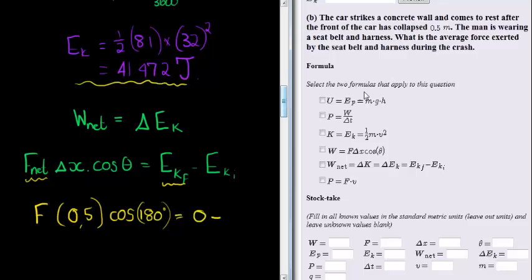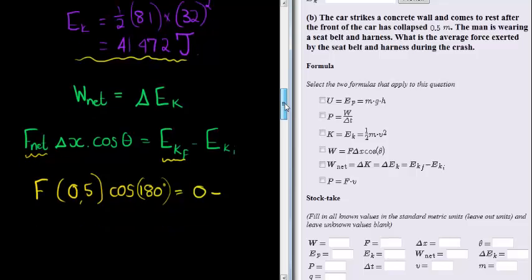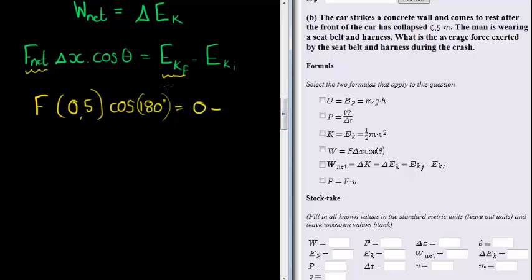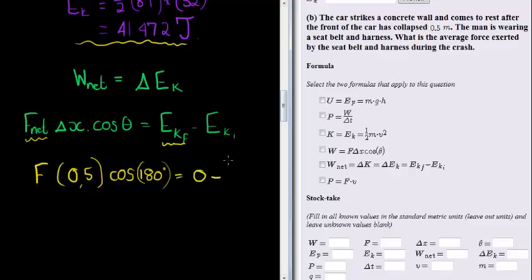The kinetic energy he had while he was traveling at 32 meters per second. So that's the man's kinetic energy, which was calculated before, 41,472 joules.